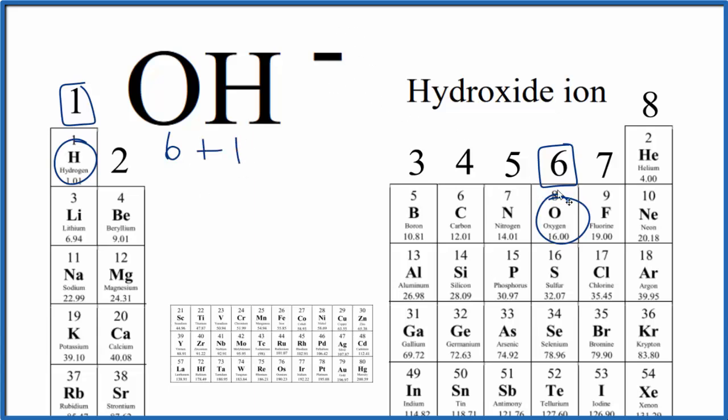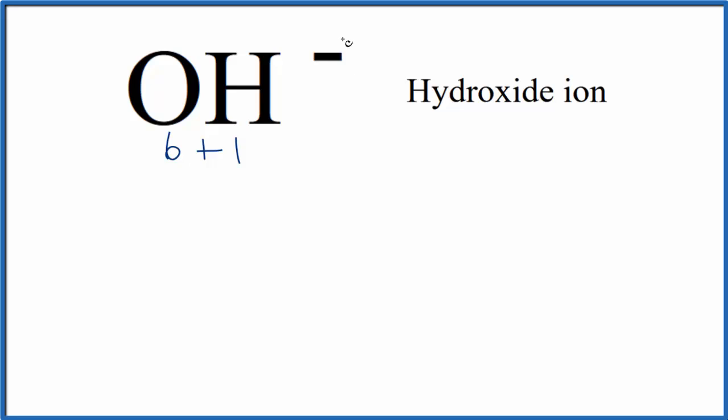Now we need to deal with this negative sign. The negative sign here is 1 minus, although we don't write the 1. That means we have one extra electron. Electrons are negative, and this is our extra electron. So we're going to add 1 here. That gives us a total of 6 plus 1 plus 1, 8 valence electrons for the hydroxide Lewis structure.